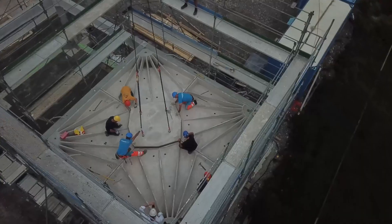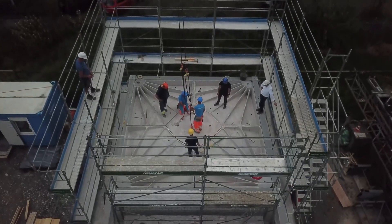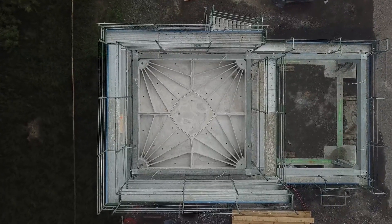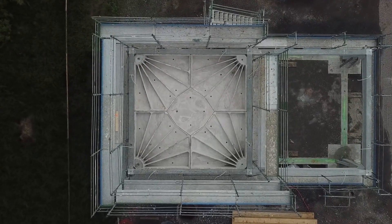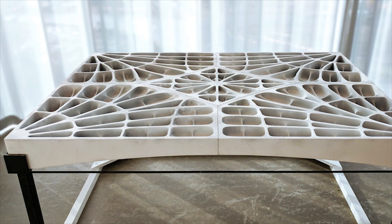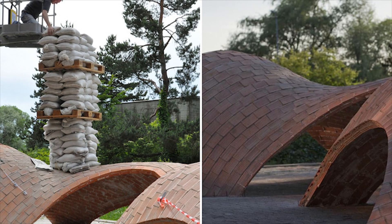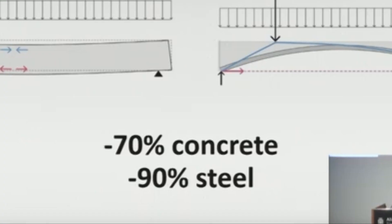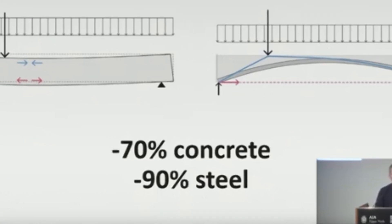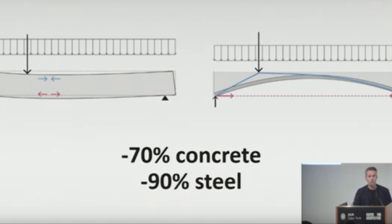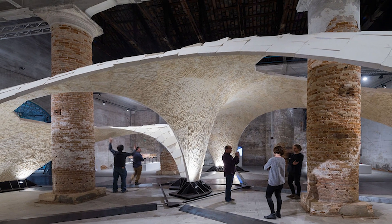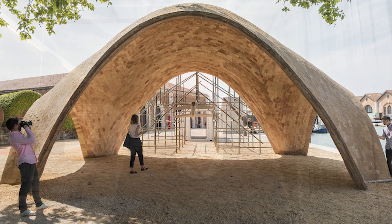Instead of forcing this artificial stone to be a straight element, we give it its natural geometry, which is the arch. By doing that, we reduce the amount of concrete by 70% compared to your typical floor plate, and the reinforcement steel by 90%. This is really not rocket science — it's just simple physics.